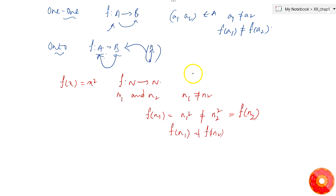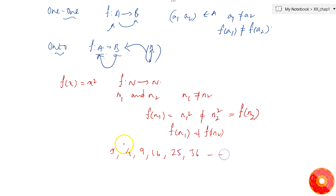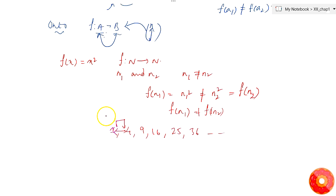Set B is the natural numbers, so ℕ spans from 1 to infinity. But not all natural numbers have a square root which is a natural number. The images of natural numbers under f(x) = x² are 1, 4, 9, 16, 25, 36, and so on. All the natural numbers in between these perfect squares are missing their pre-images in ℕ. So the given function f is not onto in nature.